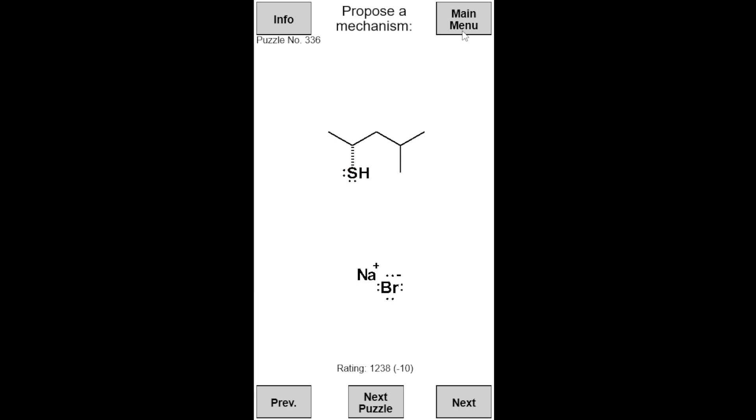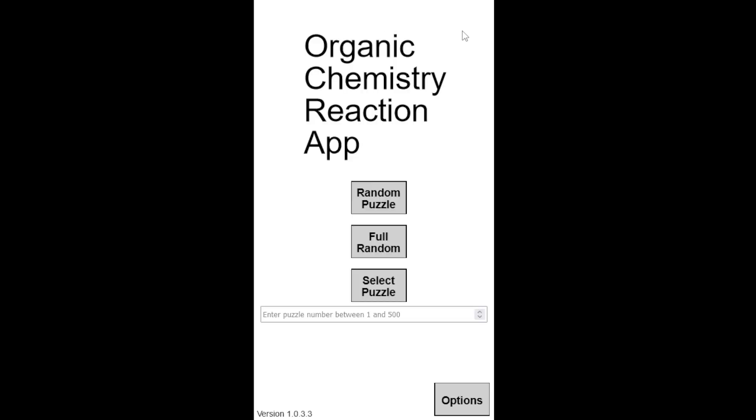OCRA tracks your puzzle rating and tries to give you puzzles appropriate for your rating. When you answer a puzzle correctly, your rating goes up and you will be given harder puzzles. If you answer a puzzle incorrectly, your rating will go down. You can also choose to play random puzzles of all difficulties by selecting the Full Random option, or you can play a puzzle of your choice by entering the puzzle number.